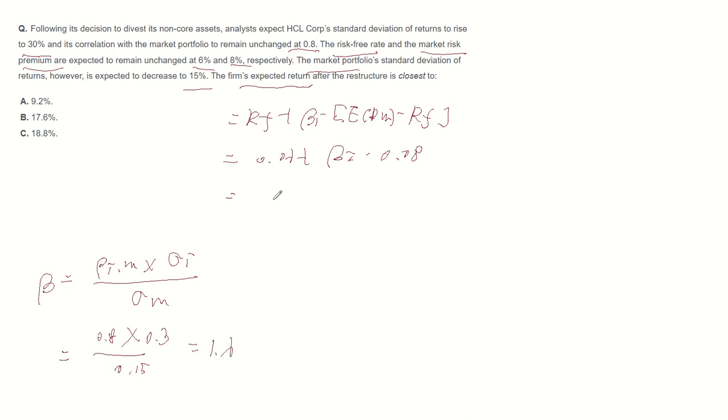So we can plug the beta number into CAPM. The stock expected return becomes 0.06 plus 1.6 multiplied by 0.08, which equals 0.188, or 18.8%.